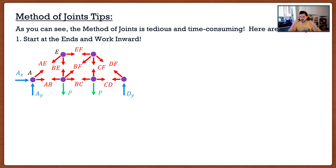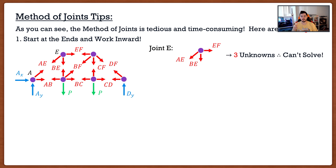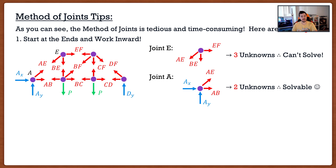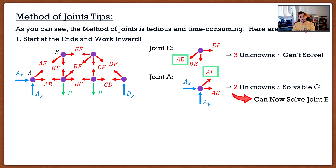For example, if you're interested in the top member EF and you start in the middle at joint E, you'll have three unknowns — but particle equilibrium only gives two equations, so you can't solve it. That's why you start at the ends, like joint A. There it looks like four unknowns, but since you already solved for Ax and Ay in step one, you only have two unknowns: AE and AB. Once you solve for AE, you can return to joint E, where your three unknowns are now reduced to two, and proceed from there.